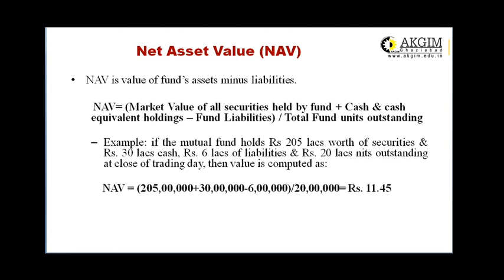Net asset value, also known as NAV, is the value of the fund's assets minus its liabilities. NAV is typically calculated on a per-unit basis. The formula for NAV is: market value of all securities held by the fund, plus cash and equivalent holdings, minus fund liabilities, all divided by total fund units outstanding. For example, if the mutual fund holds Rs. 205,000,000 worth of securities and Rs. 30,000,000 cash, with Rs. 6,000,000 of liabilities and 20,000,000 units outstanding, then NAV = (205,000,000 + 30,000,000 − 6,000,000) / 20,000,000 = Rs. 11.45.